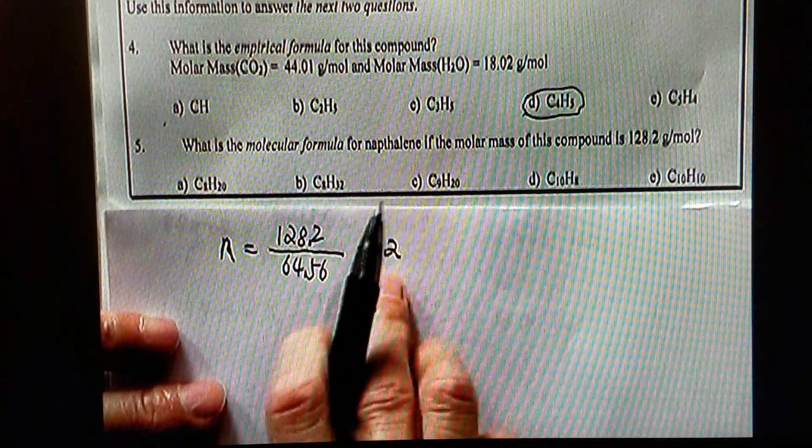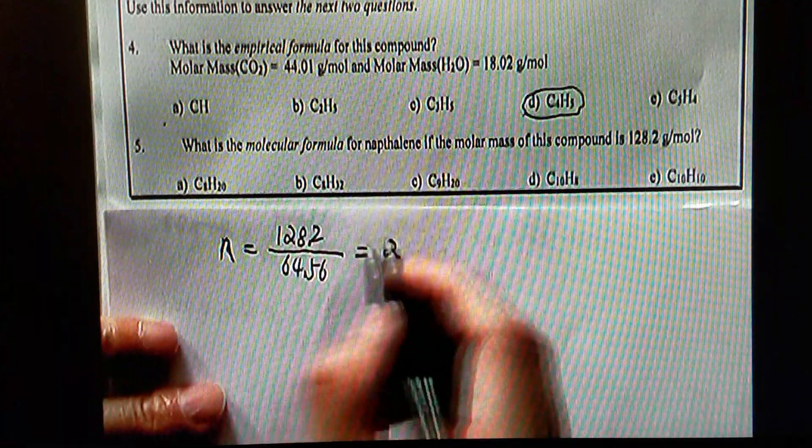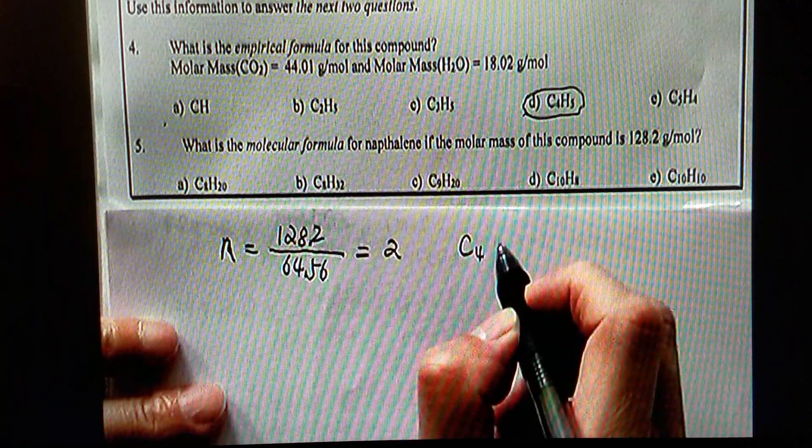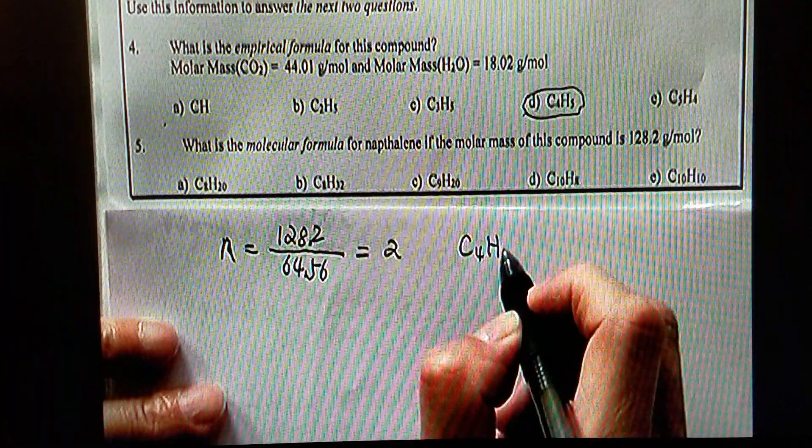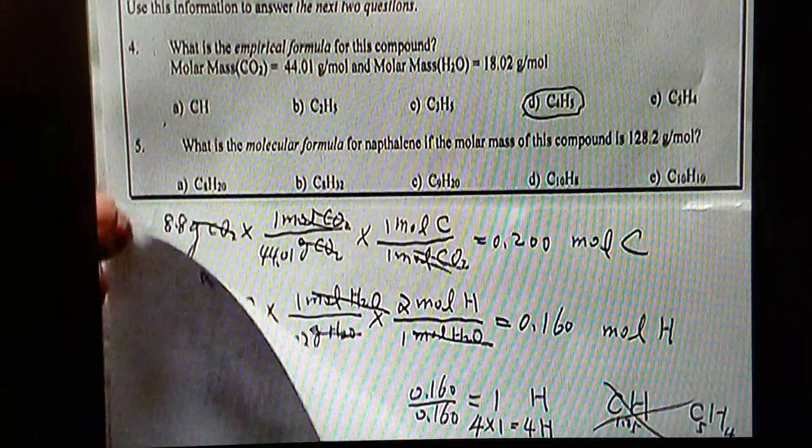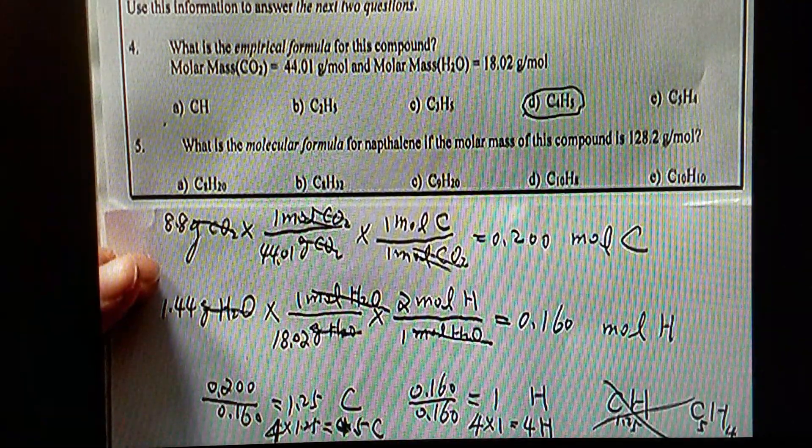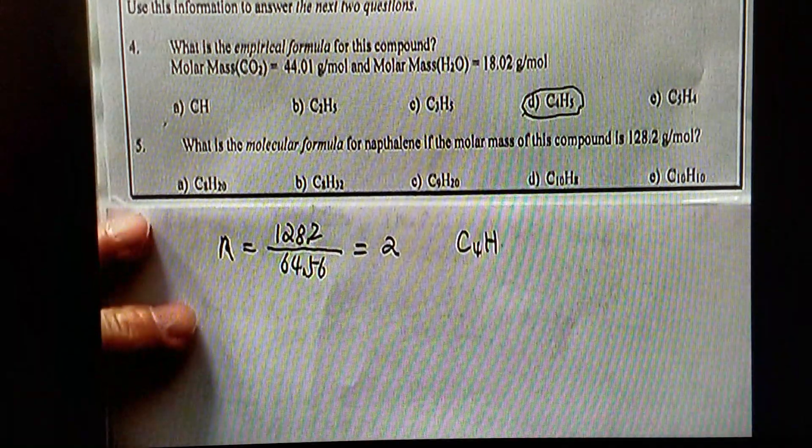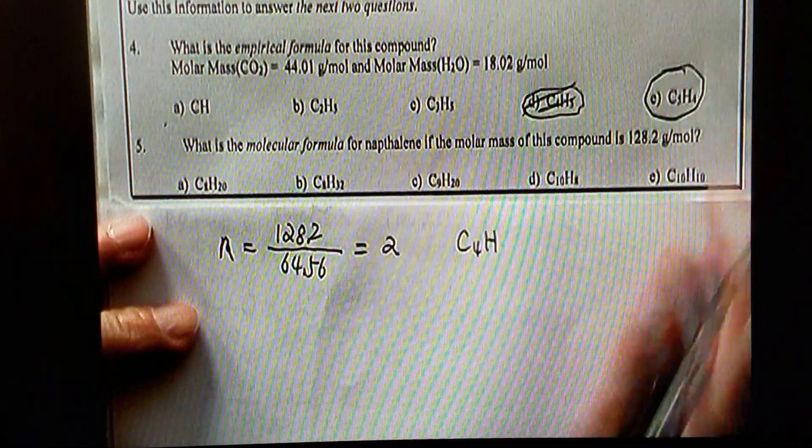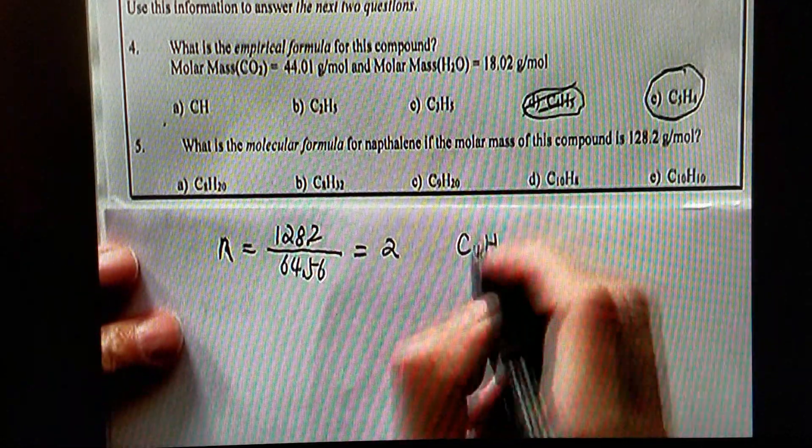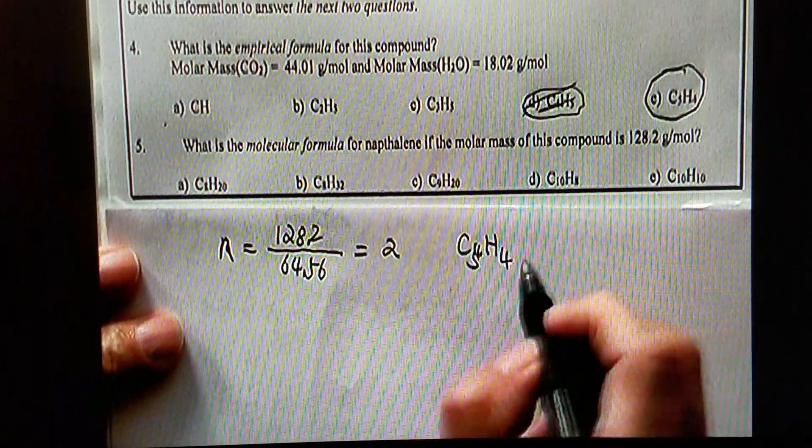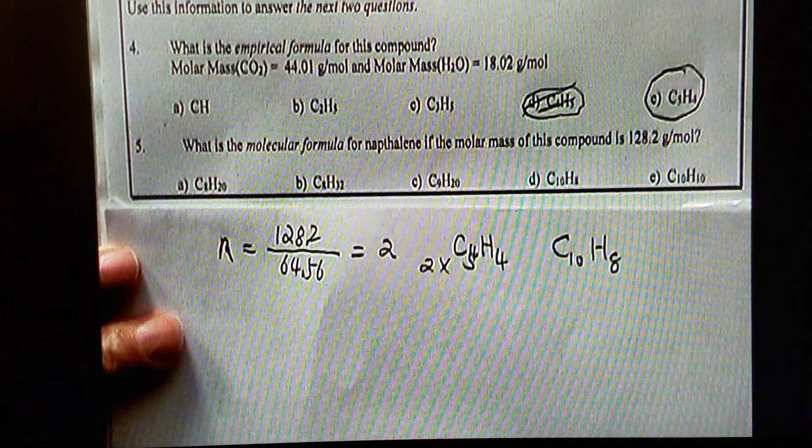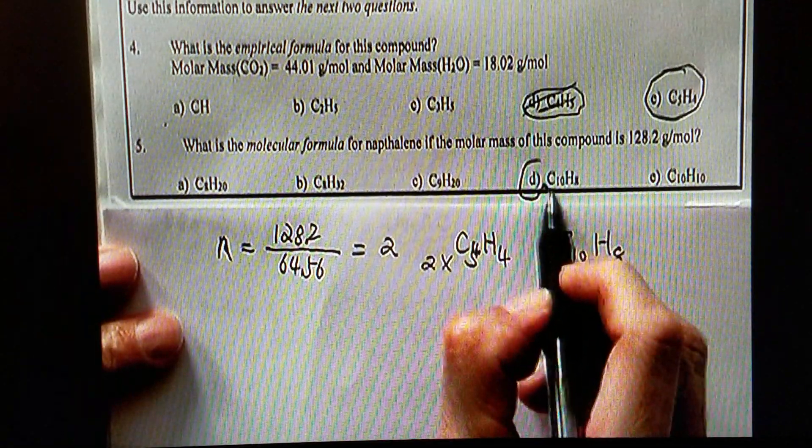So, here you can do a little bit of approximation, because there has to be a whole number of n. And then, we already know the empirical formula is C5H4. I think we made a mistake there. Should be C5H4, I apologize. So it should be C5H4. And now, C5H4, everything times by 2, that should be C10H8, which is the correct answer.